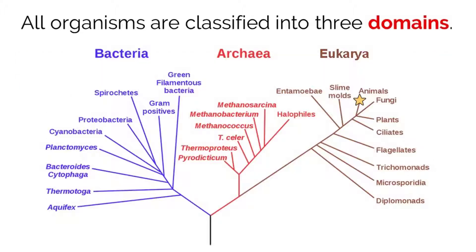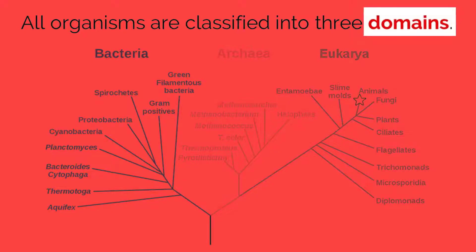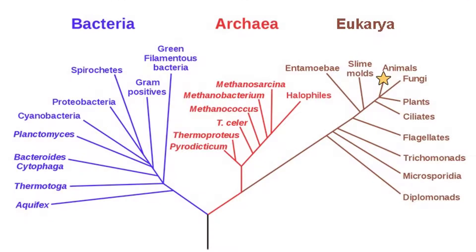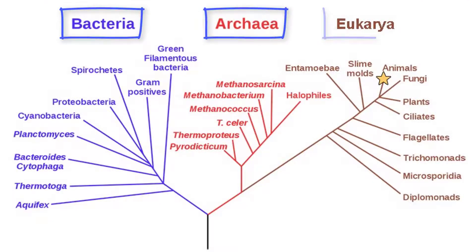The binomial naming system helps scientists classify organisms into their specific place on the evolutionary tree. But before scientists get specific, they start classifying organisms into much larger, broader domains. The three domains that scientists classify organisms into are bacteria, archaea, and eukarya.